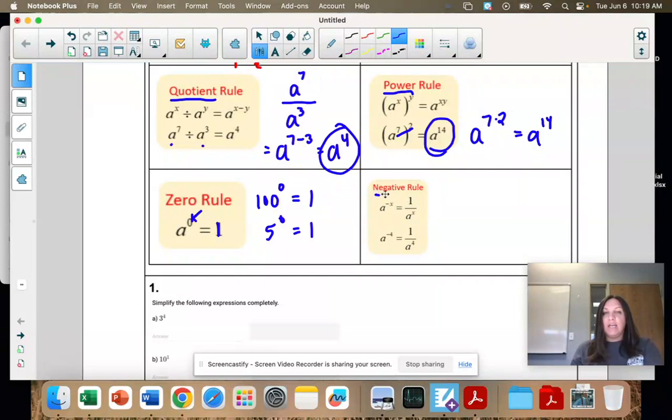Our next one is the negative rule. If we have anything with a negative exponent, we move that from the numerator or denominator and change the sign from negative to positive. So here I would make this a fraction. Let's do this example. a to the negative 4. I would make it a fraction by putting it over 1. You can do that with any number.